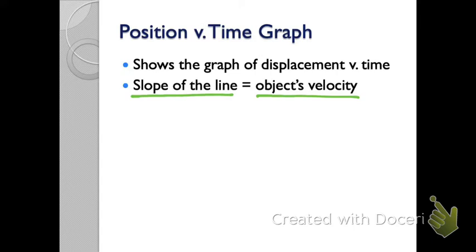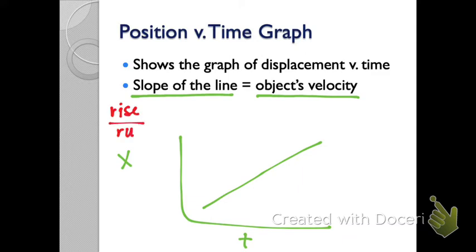I want to show you mathematically why that works. If this is position and this is time, and I take the slope of the line, how do I calculate the slope of the line? Rise over run, which is the same as whatever's on this axis divided by this axis. And so if I take x divided by t, what's that give me?